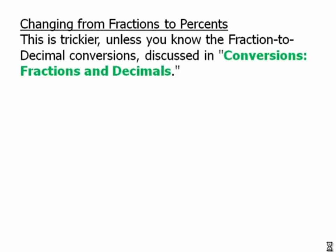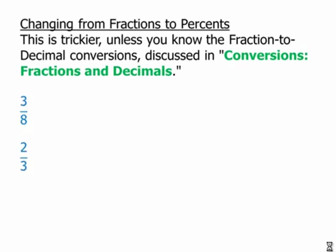Changing from fractions to percents. This is trickier unless you know the fraction-to-decimal conversion discussed in conversions, fractions, and decimals. Again, if those concepts are not familiar, please watch that video and then come back. Here we have some fractions we want to change to percents. First we're going to change them to decimals. We know that three-eighths is approximately 0.375, and two-thirds is approximately 0.6667.